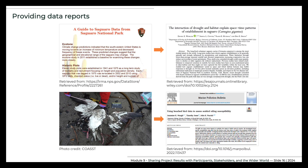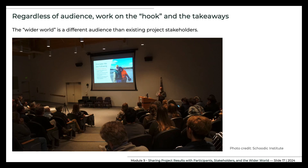More recent publications of results from citizen science projects with agency connections include one from the Saguaro Census Project, The Interaction of Drought and Habitat Explained Space-Time Patterns of Establishment in Saguaro, published in the journal Ecology, and one from COAST, Using Beached Bird Data to Assess Seabird Oiling Susceptibility, published in the Marine Pollution Bulletin. Beyond your participants, fellow staff, and other stakeholders, you might have findings worth sharing with the outside world.